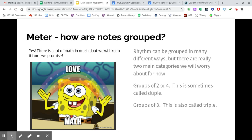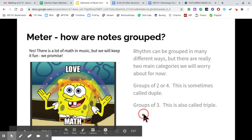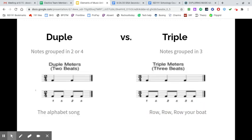The next one we're going to talk about is meter. Now, Spongebob here is kind of telling you that there is a lot of math in this, but again, we'll keep it fun. The rhythm can be grouped into different ways, and this is the meter. It can either be grouped into groups of two or four. This is sometimes called duple, which is an important word, or groups of three. And this is called triple.